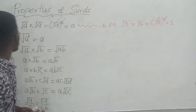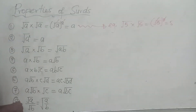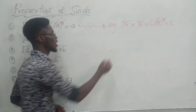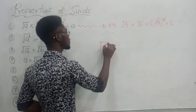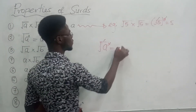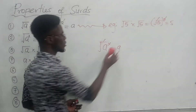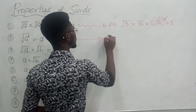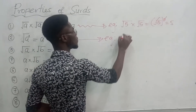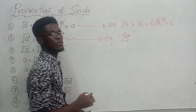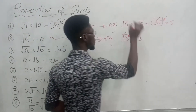The second one says: if you have the square root of a squared, it is equal to a. The square will cancel the square root, leaving just a. A good example is if you have the square root of 3 squared — the square cancels the square root and you are left with 3.